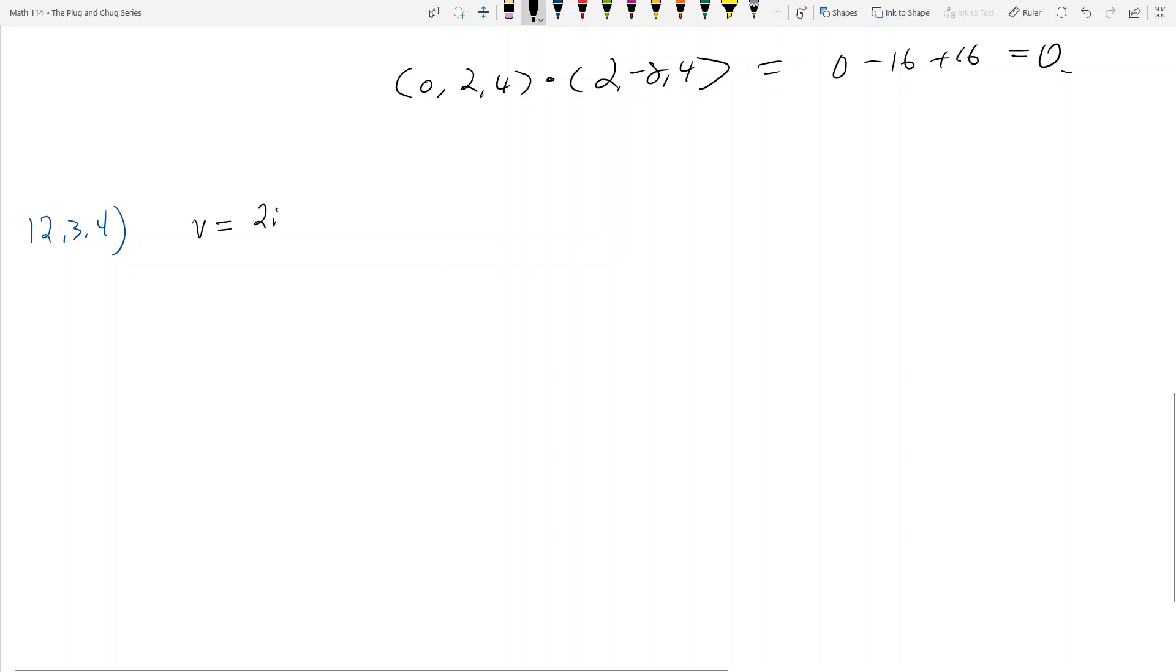v, which is 2i plus 10j minus 11k, and then w, or u, is equal to 2i plus 2j plus k. And so I never write vectors in i, j, k form. I just say v is equal to 2, 10, negative 11.